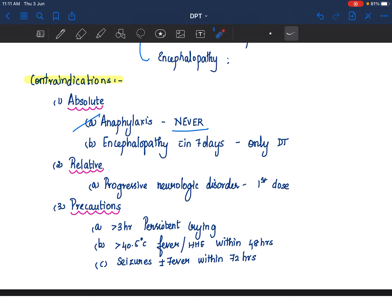Because you do not know to which component of your DPT vaccine the patient has had an anaphylaxis. Is it diphtheria? Is it pertussis? Is it tetanus? We do not know. So don't repeat a DPT vaccine again. If the patient develops encephalopathy within 7 days, you can give DT. Avoid the pertussis component for future vaccinations.